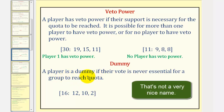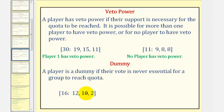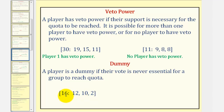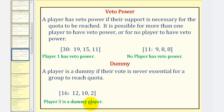A player is a dummy if their vote is never essential for a group to reach quota. Looking at this system, notice how player three is never required. Player one and player two can make quota. But player one and player three cannot reach quota, because they have a weight of 14. If player two and player three form a group, they have a weight of 12, again below quota. Therefore, player three is never essential to reach quota, so player three is a dummy player.